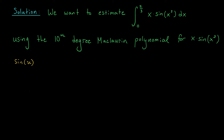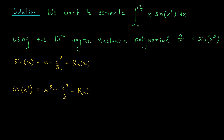We've actually done this before — you can check an earlier example video or confirm it using the definition of a Taylor polynomial. What you get is u minus u³/3!. We also have a remainder term r₃(u). Next, replacing u with x³, we get x³ minus x⁹/6, with a remainder r₃(x³). Finally, multiplying the whole thing by x gives us x·sin(x³) = x⁴ minus x¹⁰/6, with remainder x·r₃(x³).